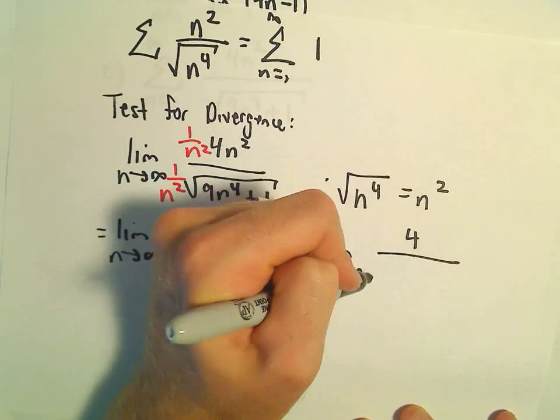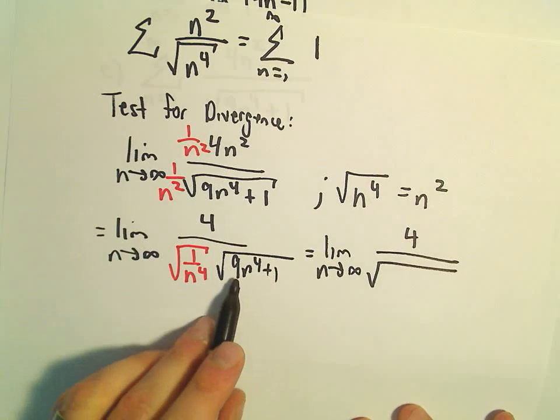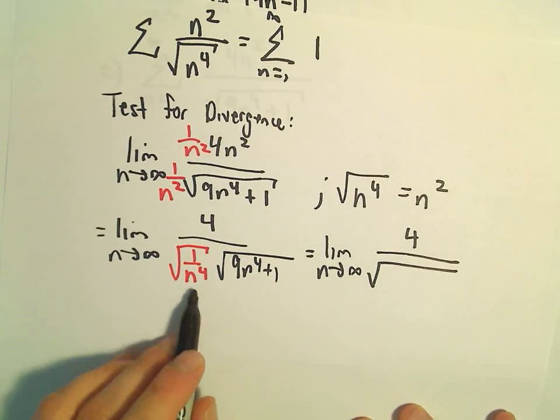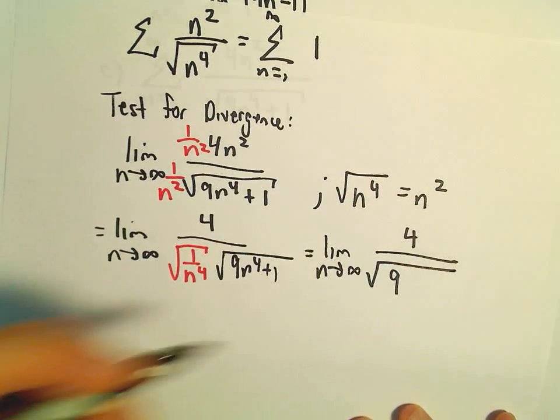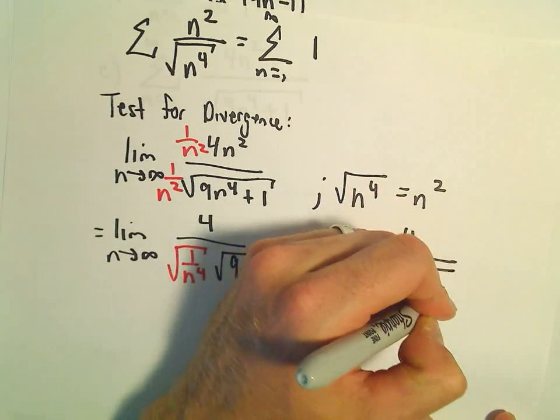So we're left with 4 in the numerator, and the denominator will have 9n to the 4th over n to the 4th, which is 9, plus 1 over n to the 4th.